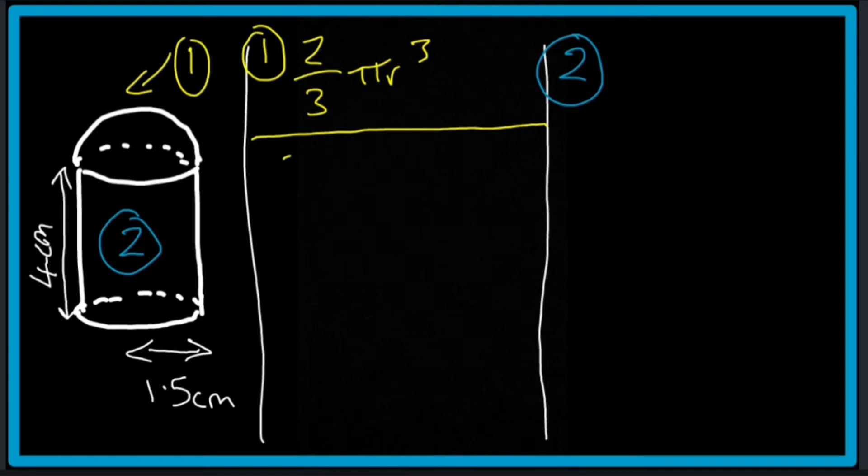So all I'm going to do is substitute the value of the radius into this equation. So I get two thirds times by pi times by 3.375.